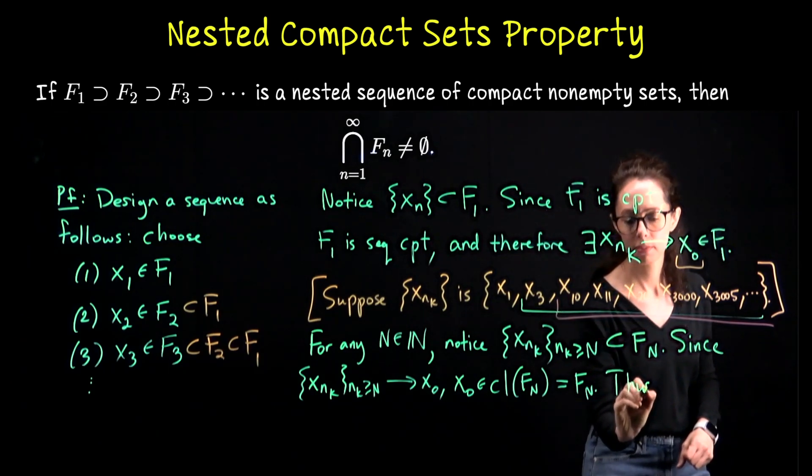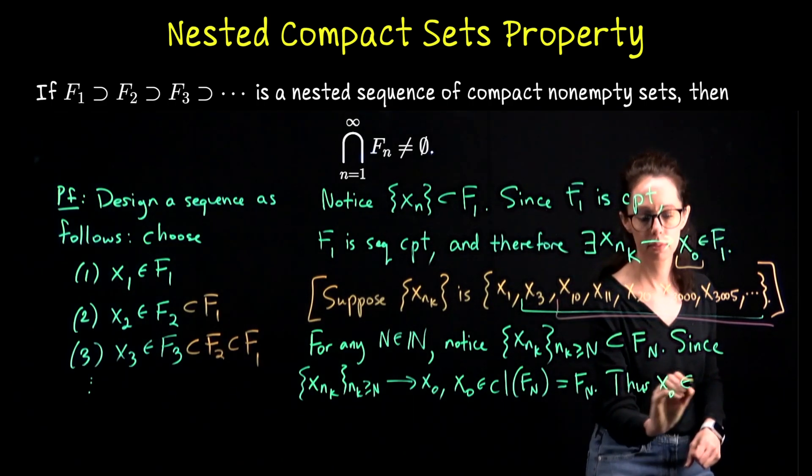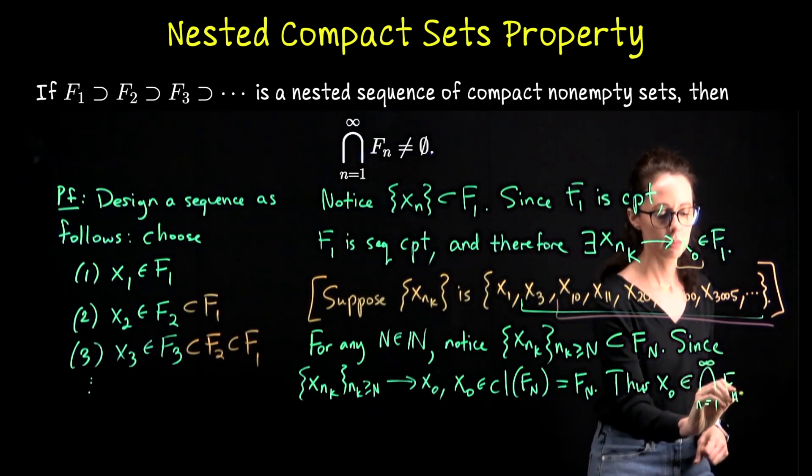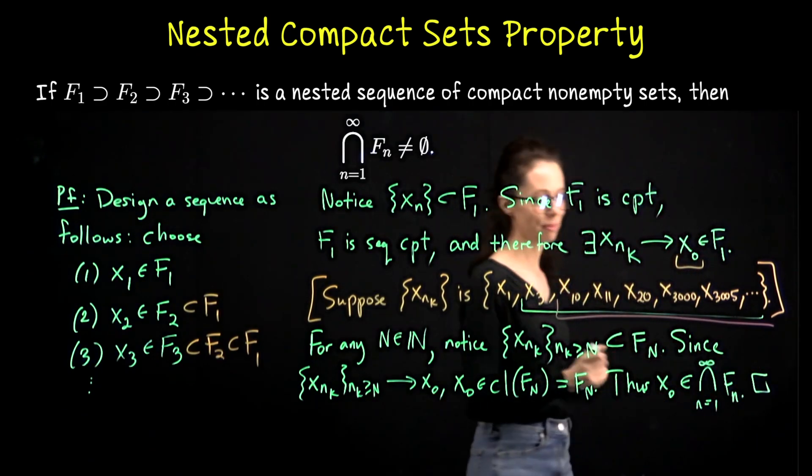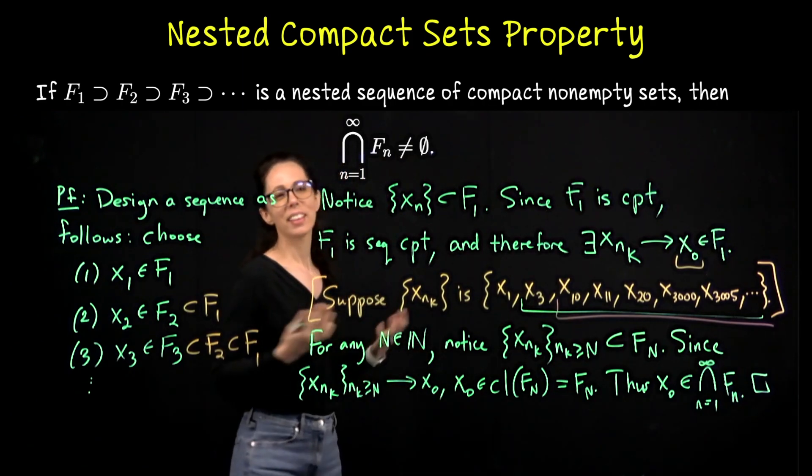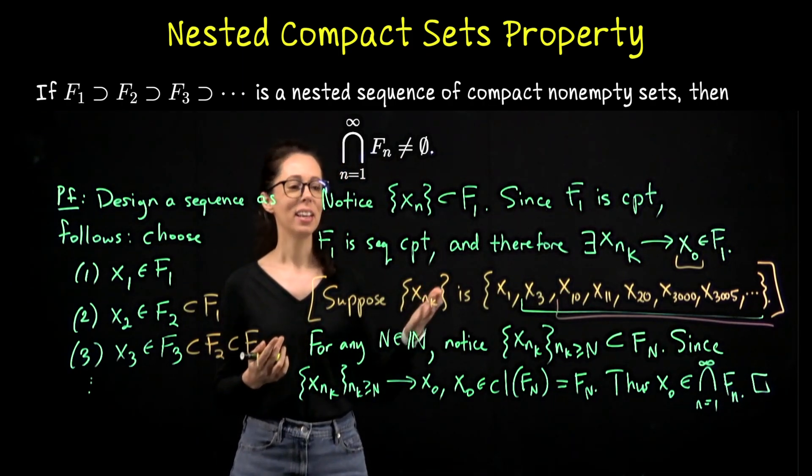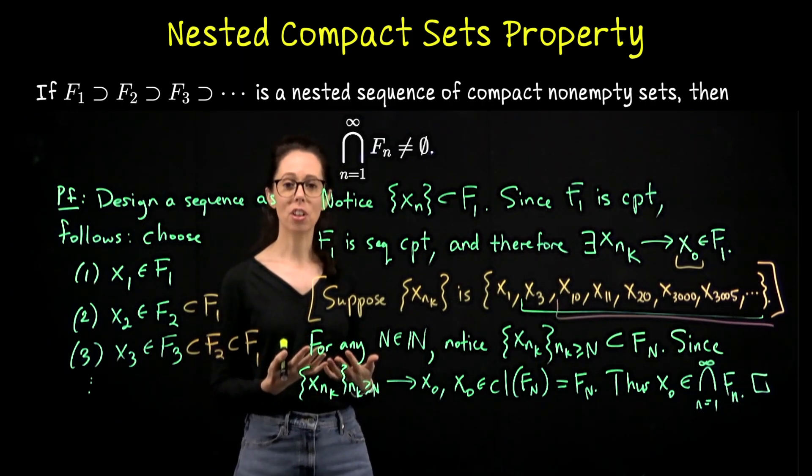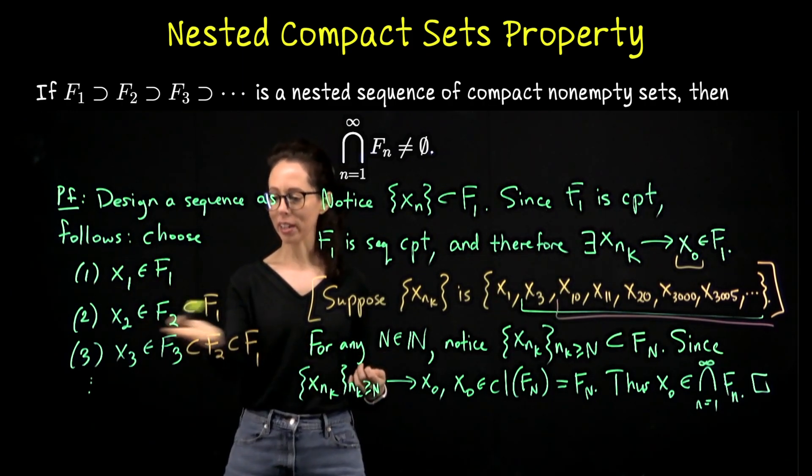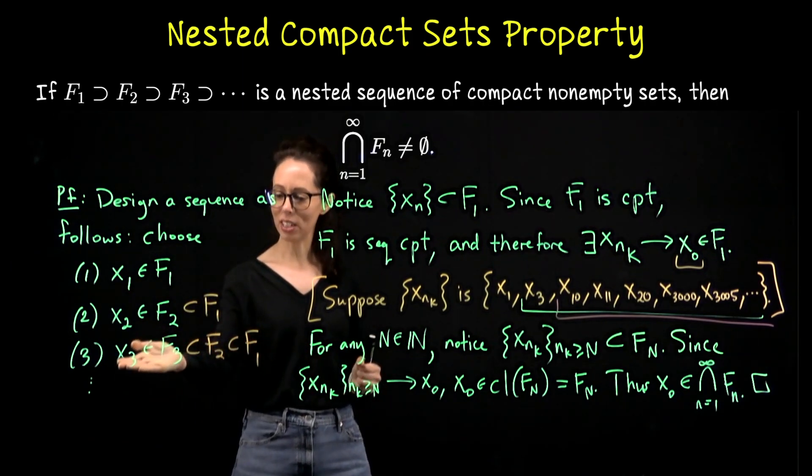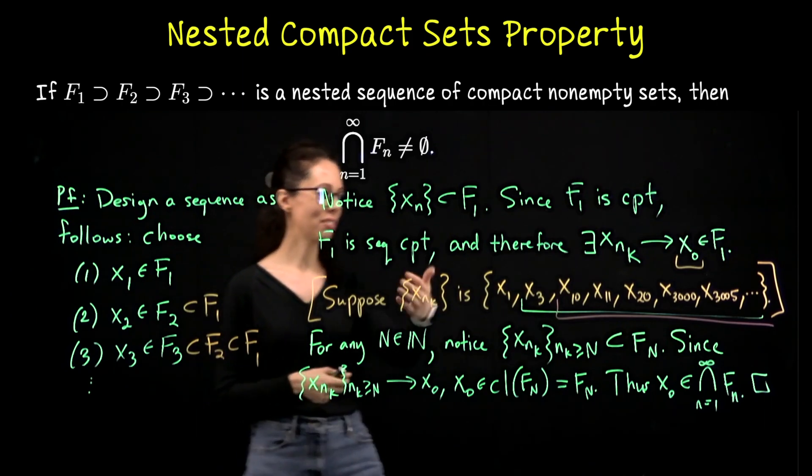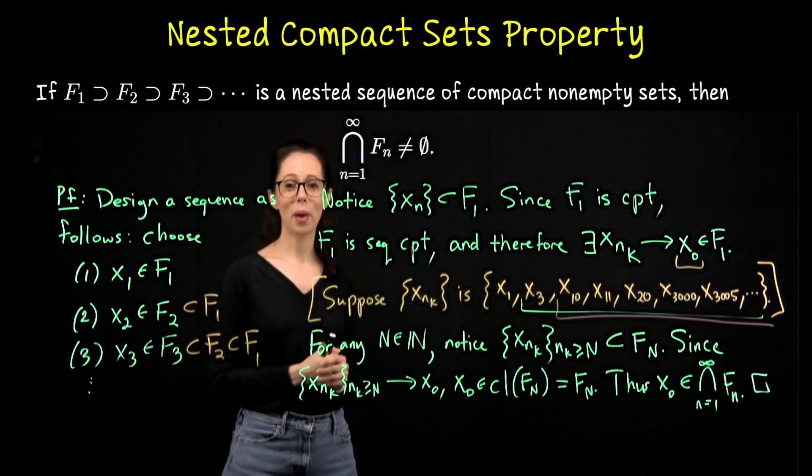I think this is a very fun proof. We pass from compactness to sequential compactness. We build up a sequence. I think the observations along the way are fun. So recognizing that as we make the sequence, each term lives in all the previous compact sets, and looking at this behavior of the subsequence. So I hope you enjoyed this proof as well. Thank you for your attention.